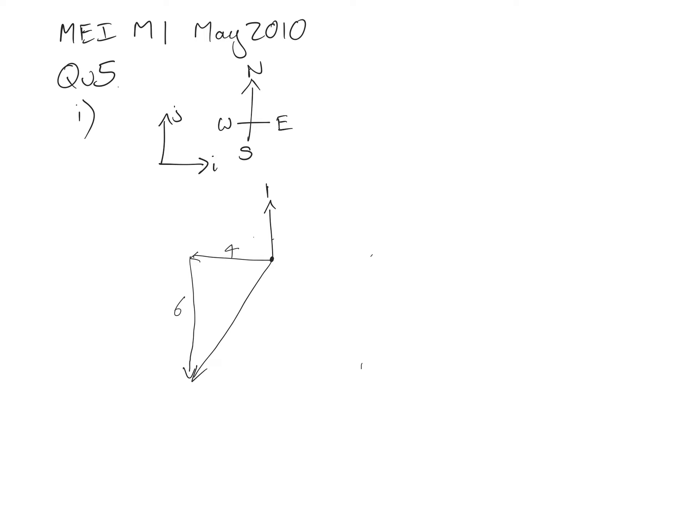So there's my north line, so I want that angle there. First of all I'm going to work out this angle. Theta, tan theta equals the opposite over the adjacent, therefore theta equals 56.3 degrees.